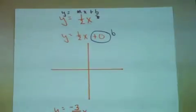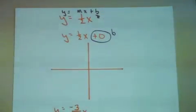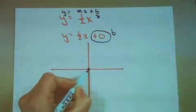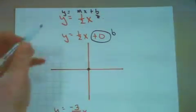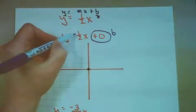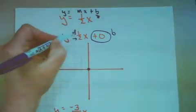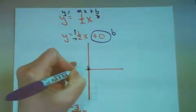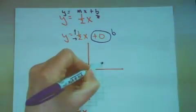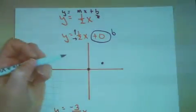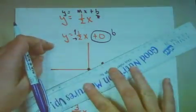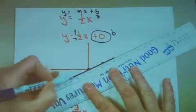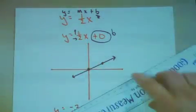Let's look at our coordinate axes. I'm going to start here at 0, the origin, and now I look at my rise over run. I need to go up 1 and to the right 2. Up 1, then 2 to the right. Take my straight edge and create a wonderful straight line.